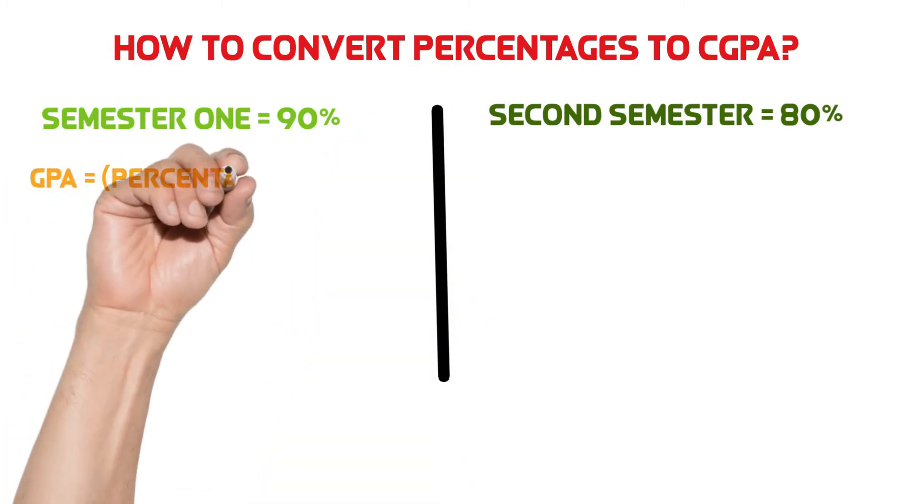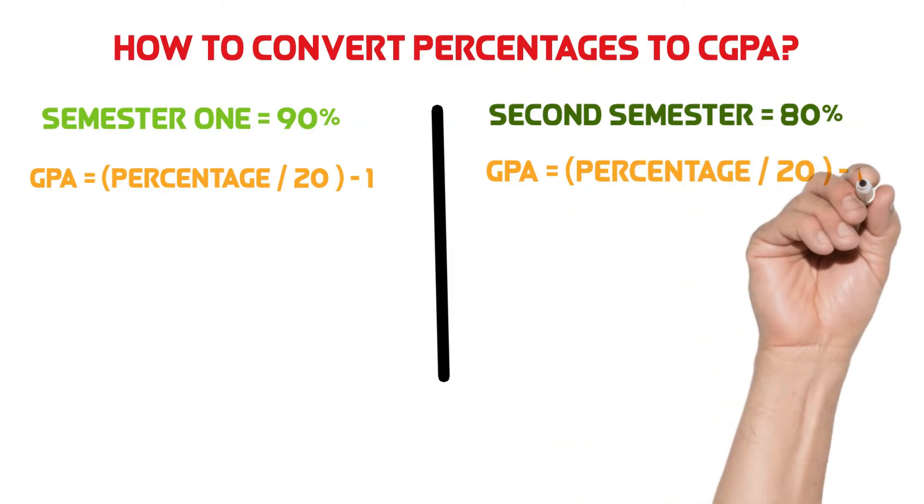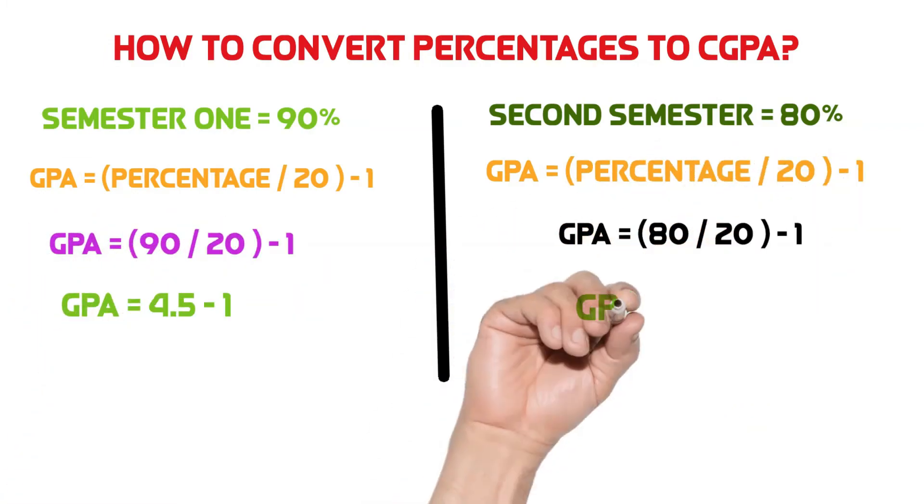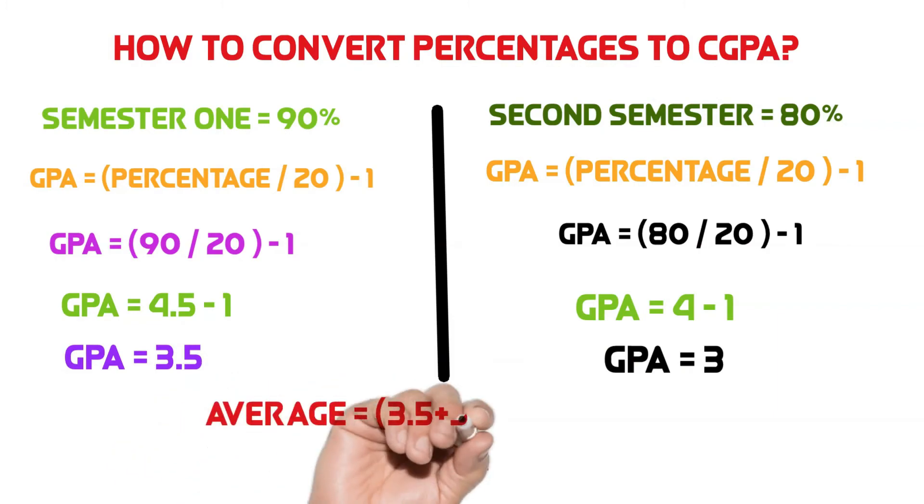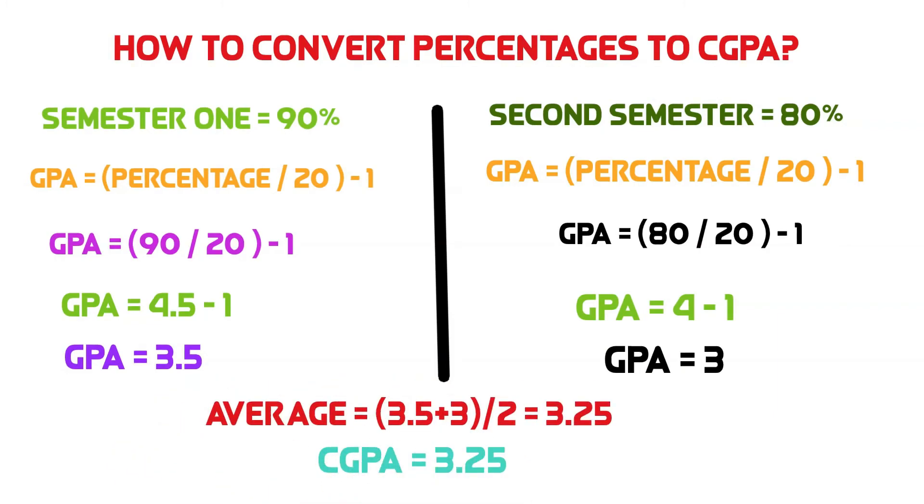Now we will put these percentage numbers in our formula. We will get a GPA for each semester. Now we use our percentage to GPA converter formula. We get a 3.5 GPA in semester 1 and 3 GPA in the second semester.